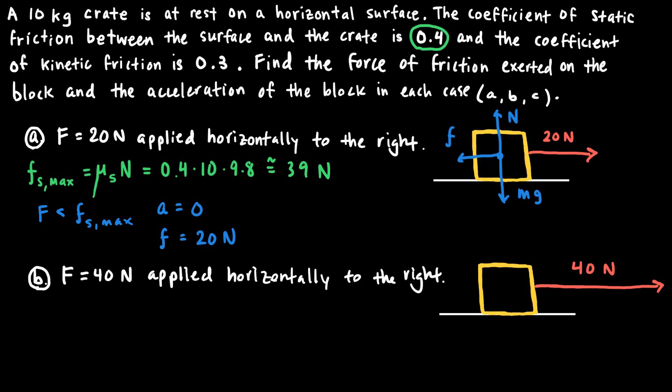In Case B, something different happens. The force being applied is 40 newtons, which is greater than the maximum value of static friction of 39 newtons. This means the block should move. Since the block is sliding, the friction acting on it is no longer static friction but kinetic friction. The frictional force is now given by the coefficient of kinetic friction times the normal force.